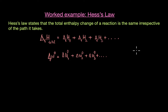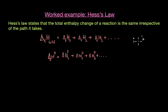By standard conditions we mean 298 Kelvin temperature, one atmospheric or one bar pressure, and one molar concentration of the reactants. This is possible only because enthalpy is a state function — it simply depends on the initial and the final states and does not depend on the path taken. This is a brief recap of Hess's Law, so let's use this concept to solve a few numerical questions.